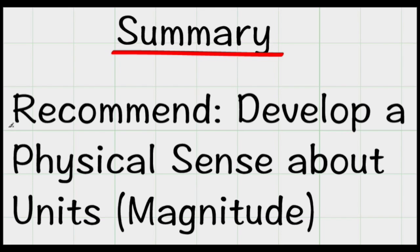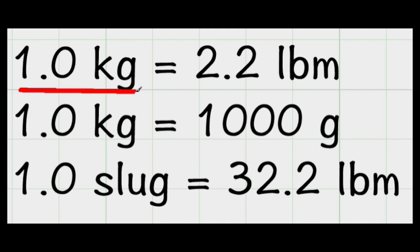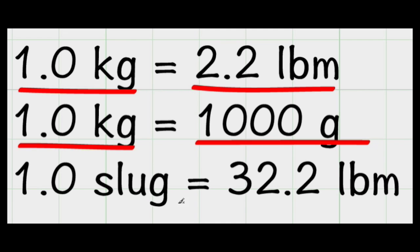Summary. I really recommend develop a physical sense about units. For example, one pound mass is the amount of mass very nearly in one pint of water. Or you can imagine a cube of water as I've sketched here, about three inches or 7.7 centimeters on the side. That amount of water will have a mass of one pound mass. One kilogram of mass is the same amount of mass as 2.2 pounds mass. Similarly, one kilogram is equivalent to a thousand grams of mass. And one slug of mass is the same amount of mass as 32.2 pound mass.